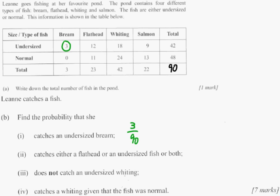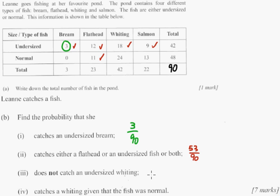Next: catches either a flathead or an undersized fish, or both. This one's a little tricky because some kids will just add those together, but you don't want to count the 12 twice. So I take this one, this one, this one, this one, this one, and that one — adding together you get 15, 33, 42, plus 11 is 53. So the answer is 53 out of 90. I would just leave it.